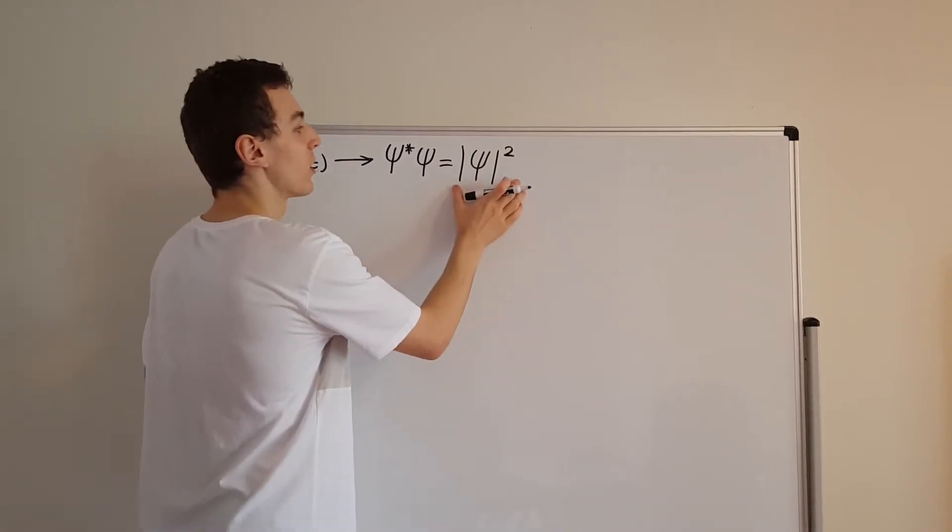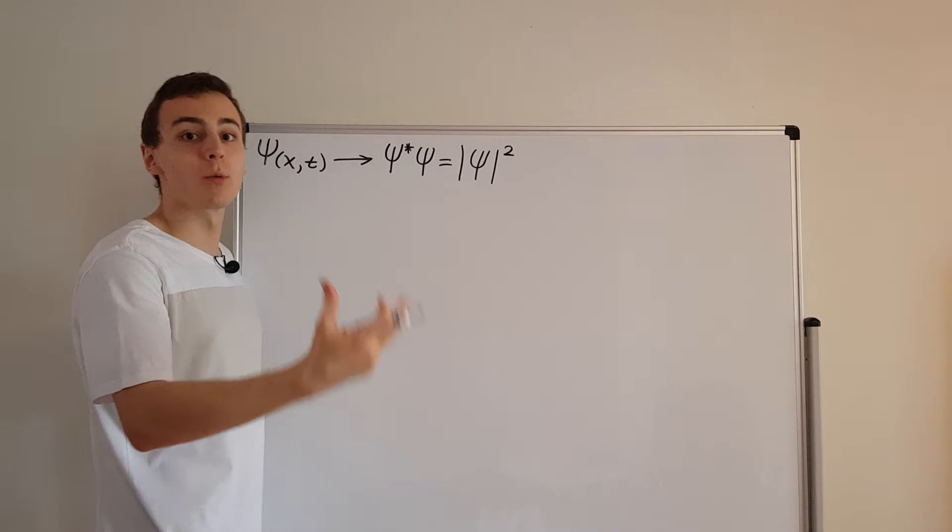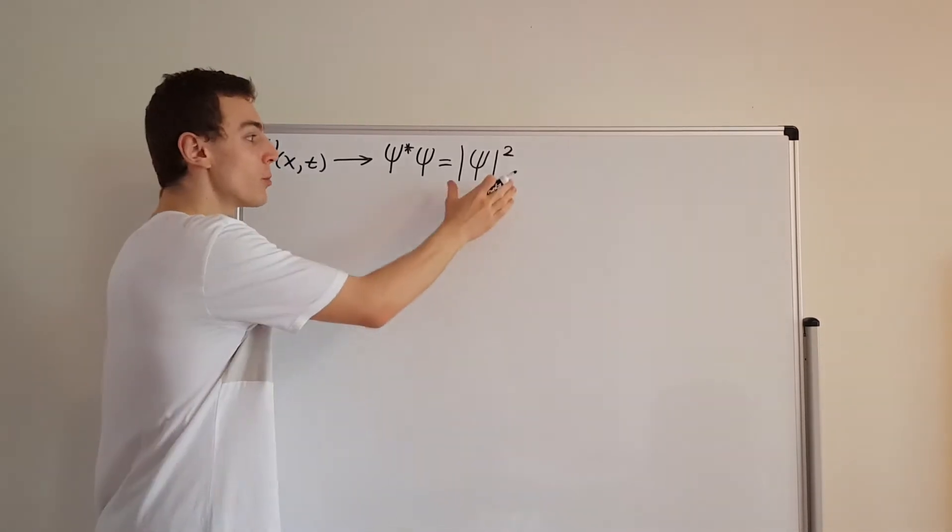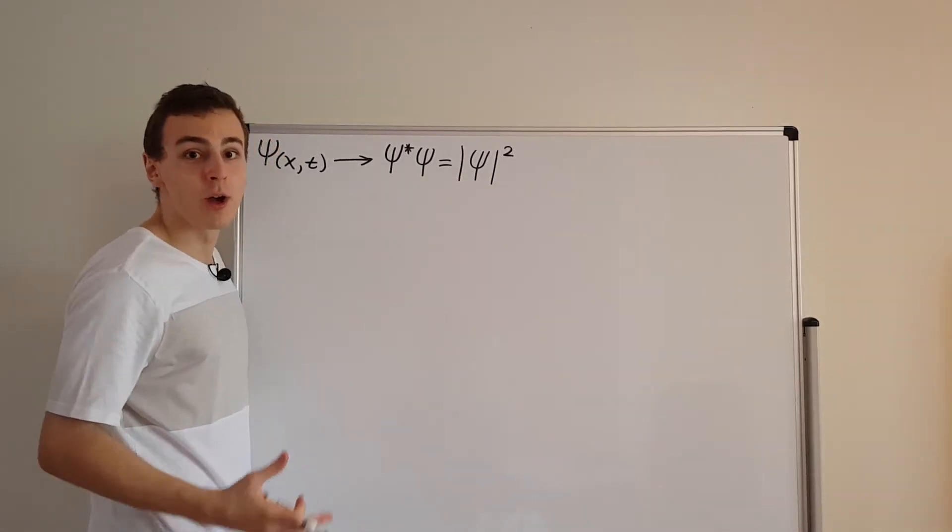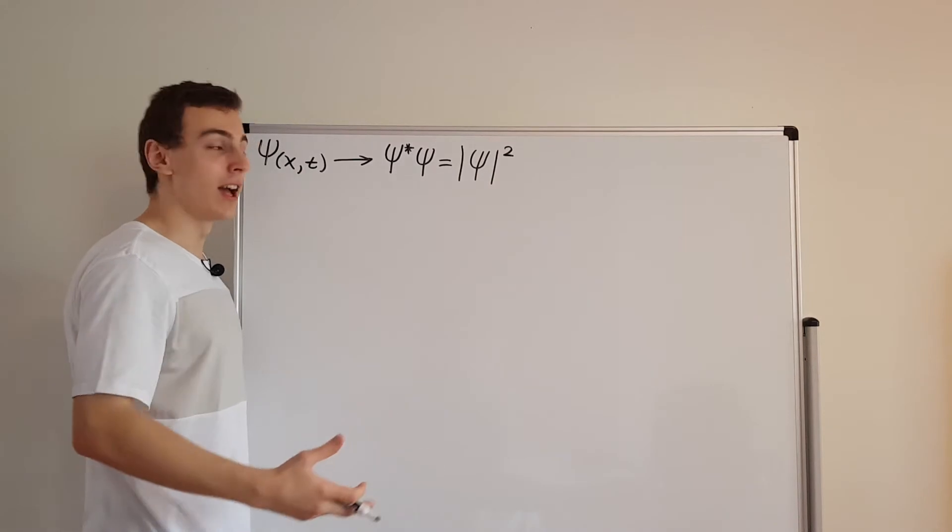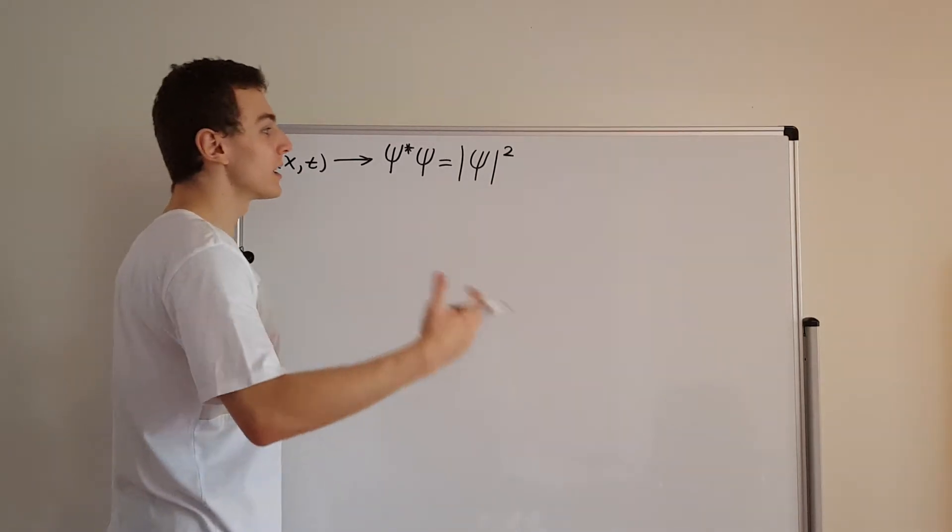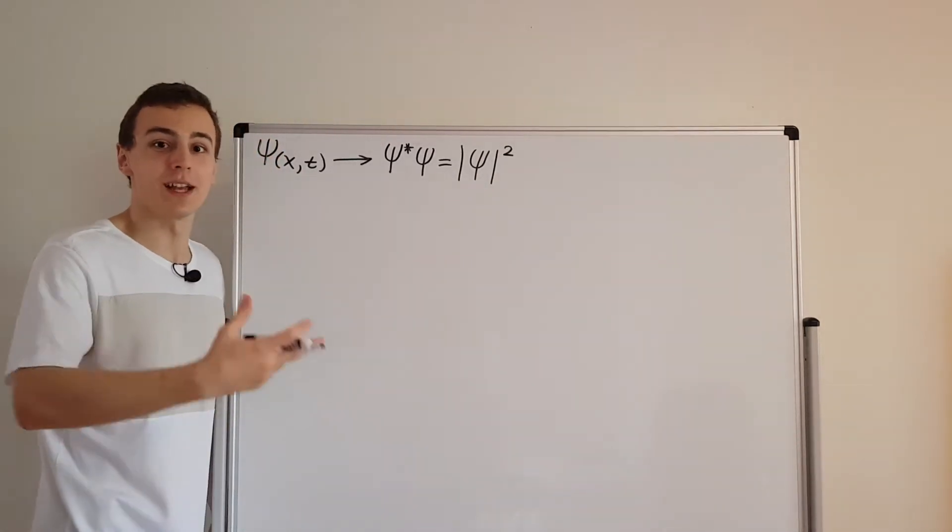And this is what we're going to define to be the probability density. We're interpreting this mathematical value as the probability density, and that's going to tell us probabilities once we actually calculate some integrals.